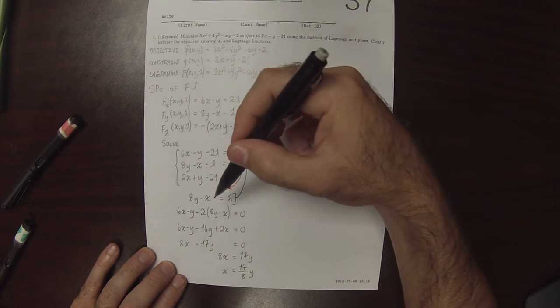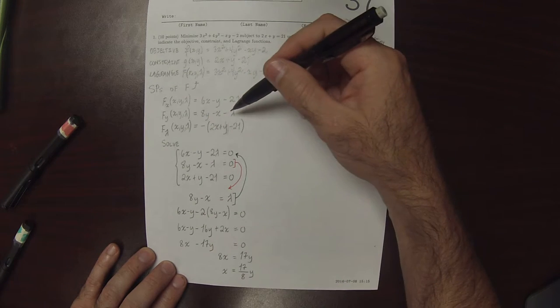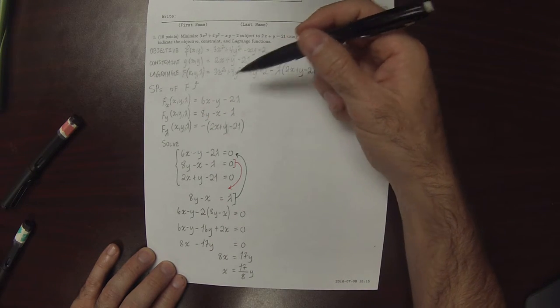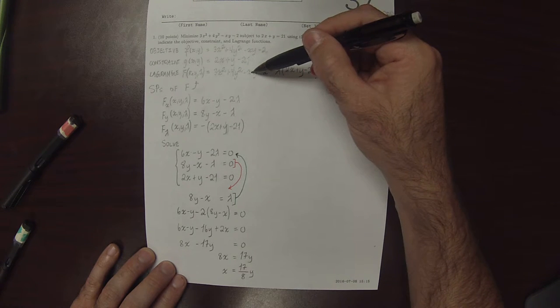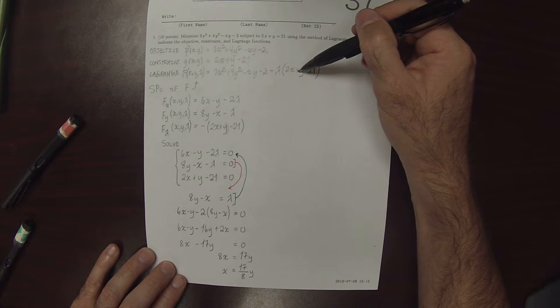Let's check that. So 8y minus x, 8y minus x minus lambda.